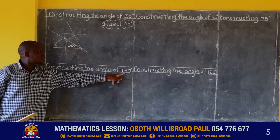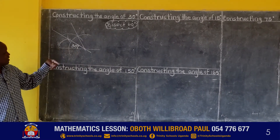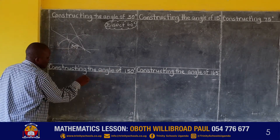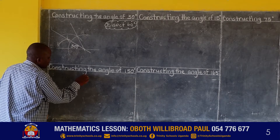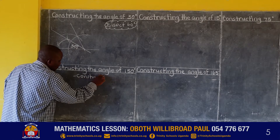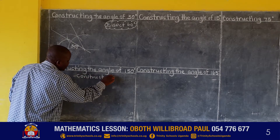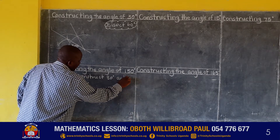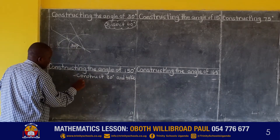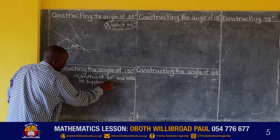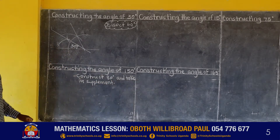This angle also still comes from 60 — 60 to 30 degrees. What does that mean? To construct 150, construct 30 degrees and take it as a supplement. The supplement of 30 degrees is 150 degrees.